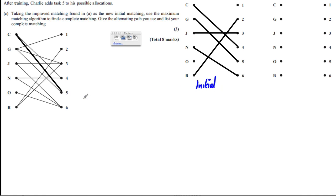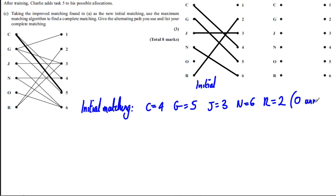And I'm going to carry out one more go through of this algorithm. So just to, as we always do, write down your initial matching just for good practice. Initial matching. So that's C is with 4. G is with 5. J is with 3. N is with 6. R is with 2. And O is unmatched. And we're going to go for an alternating path. So alternating path.